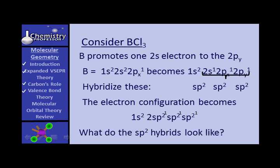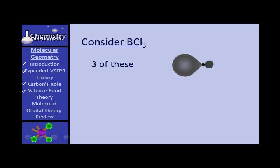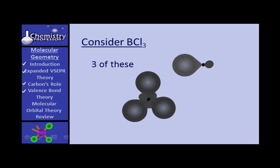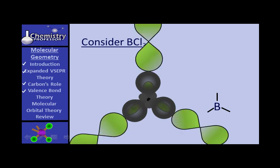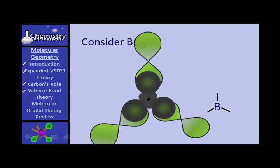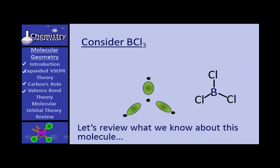What do those SP2 hybrids look like? They're kind of like the SP hybrids — just a little longer — and they fit at three points of a triangle. You have boron in the middle with three areas it can bond in. When bonds are formed with chlorine, they overlap and form the sigma bonds. The rest of that atomic orbital goes away.